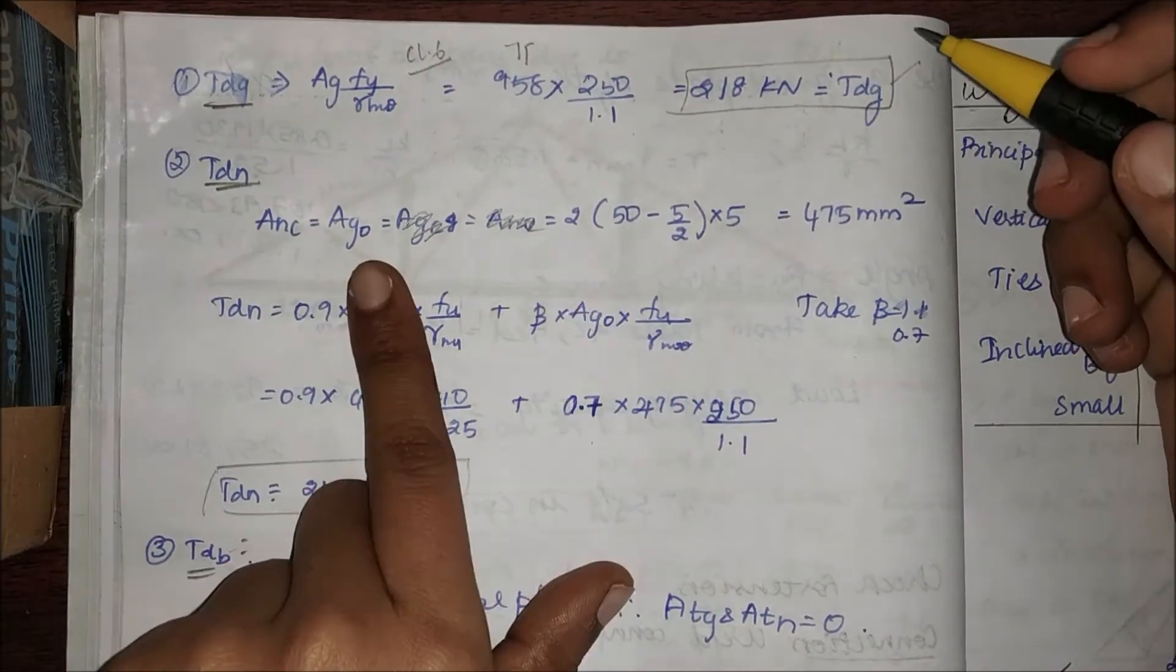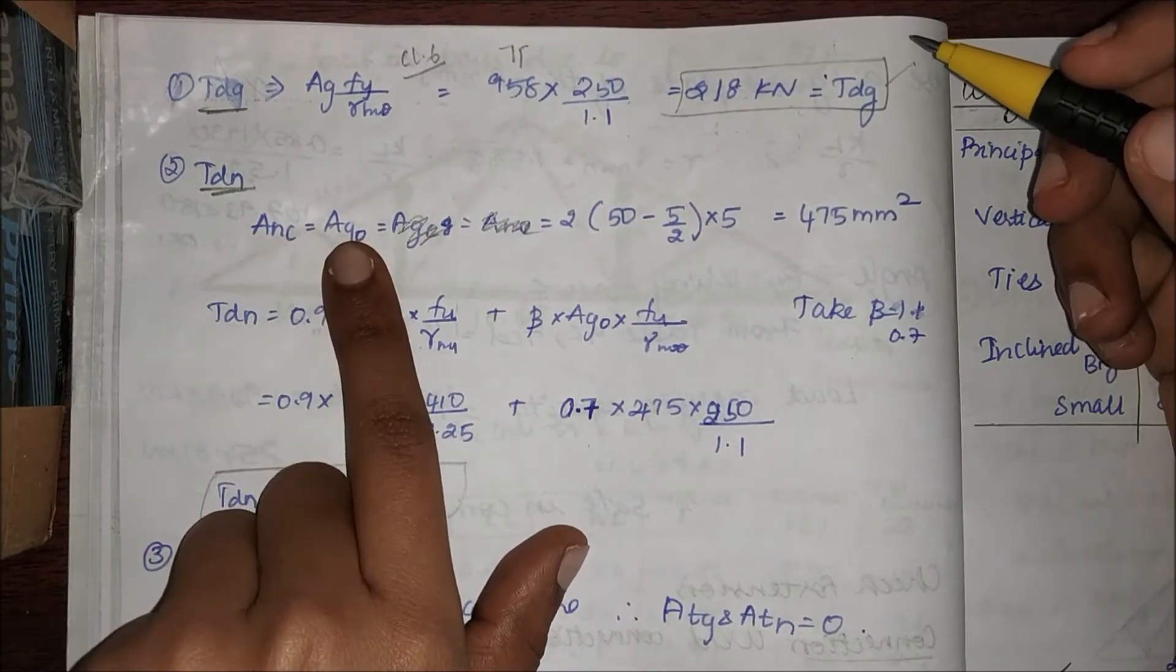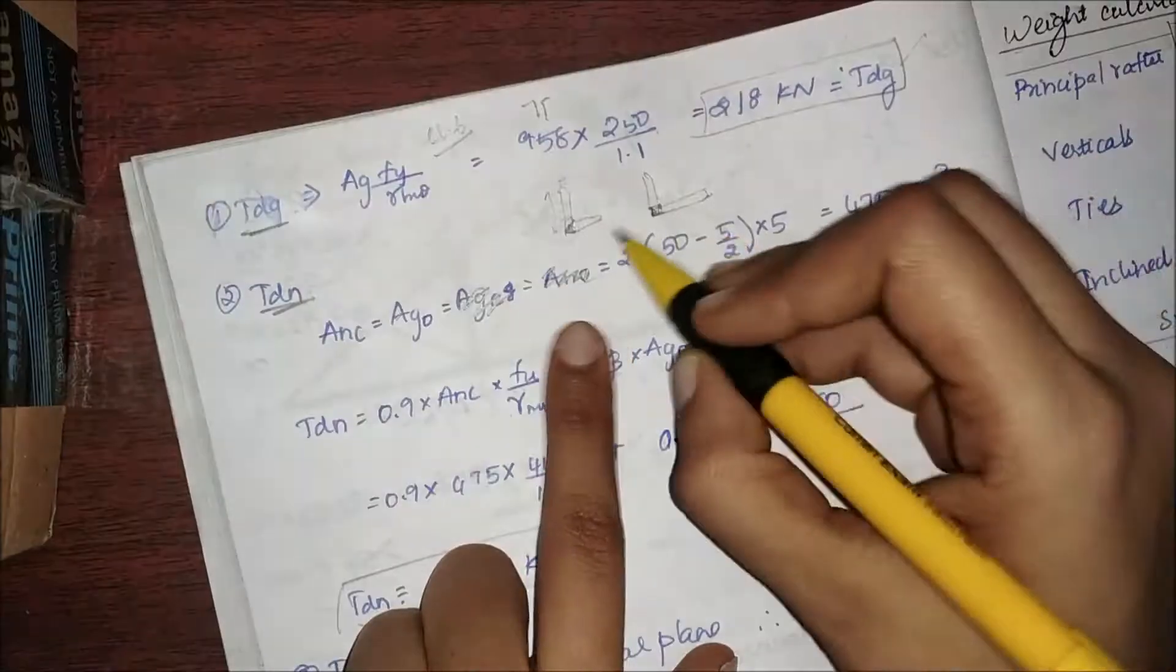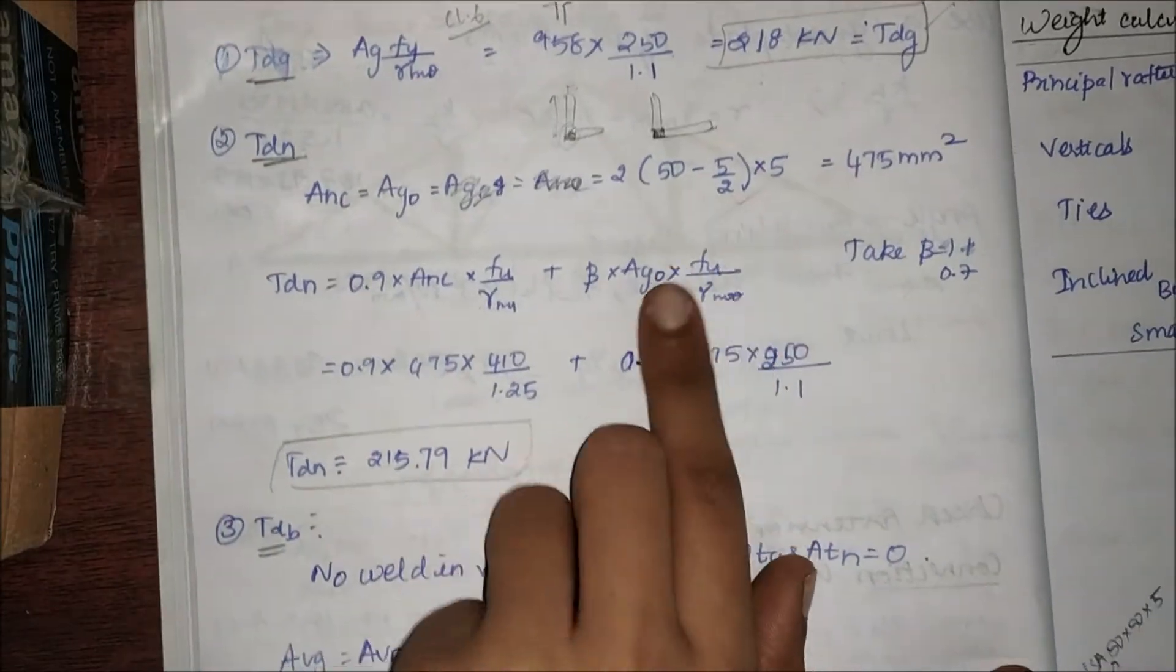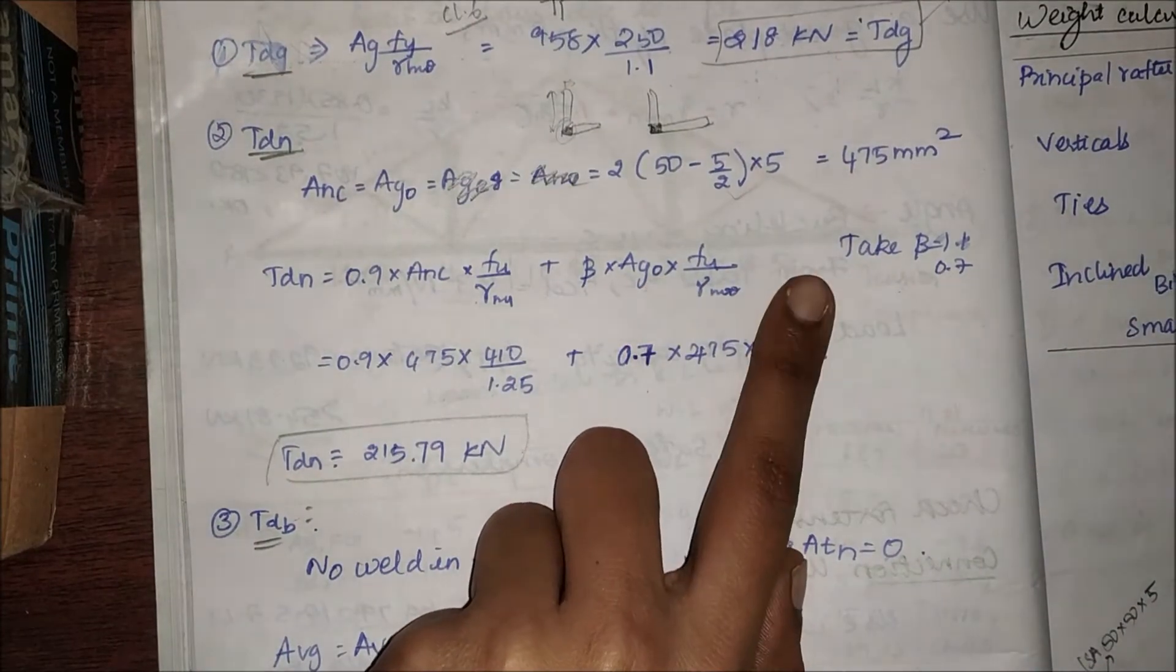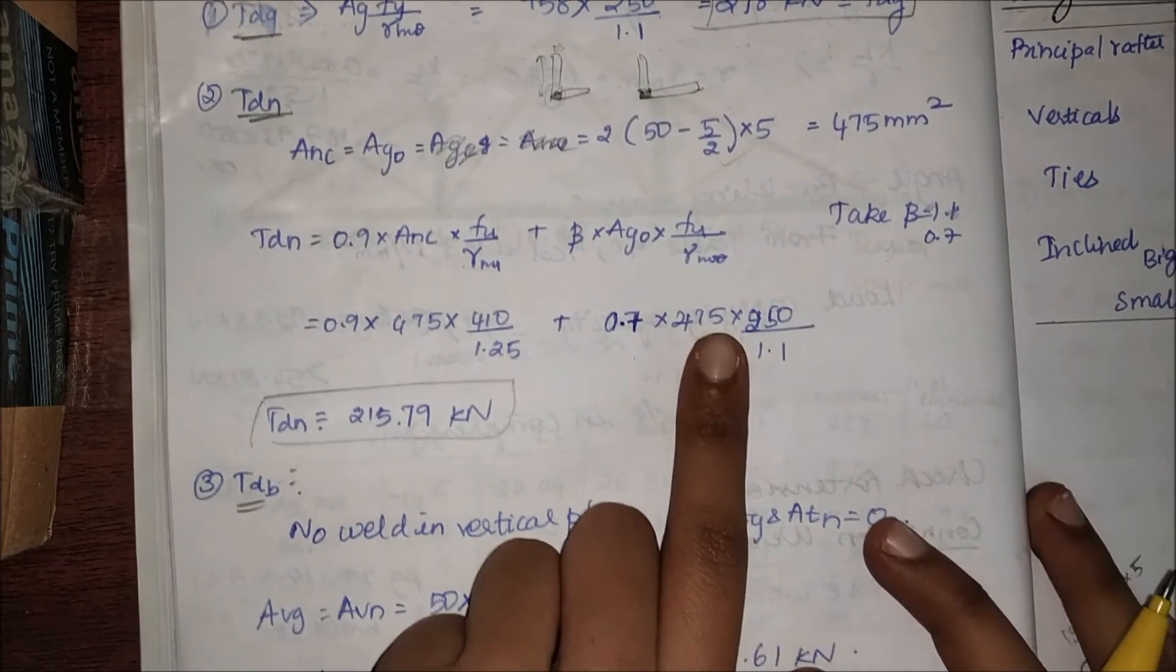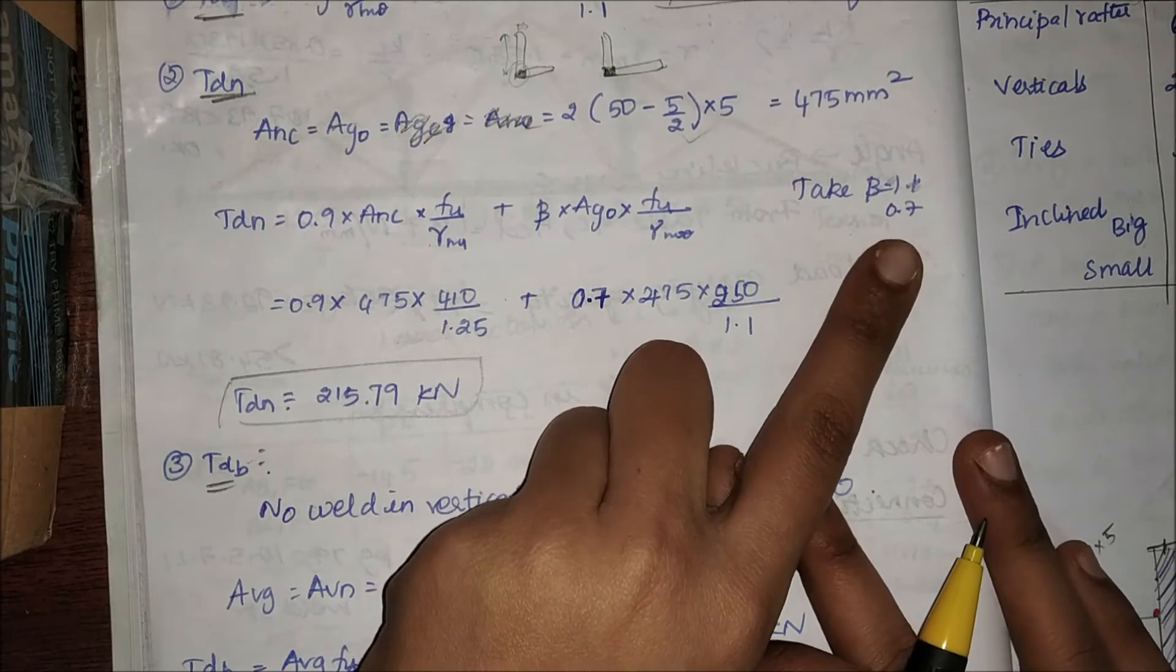Coming to Tdn: since it is a weld, our net area and gross area are going to be the same since it is a welded connection. From the given formula you can find all these things. Beta I'm going to take as 0.7. I'm not going to calculate beta; it's a big tedious process.